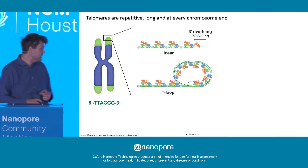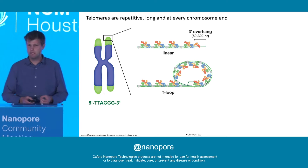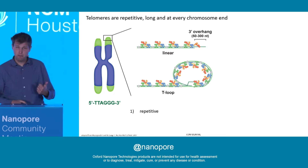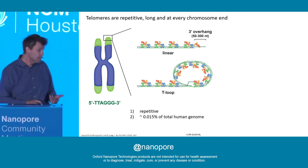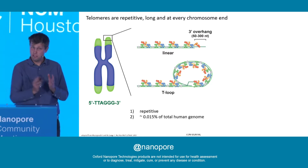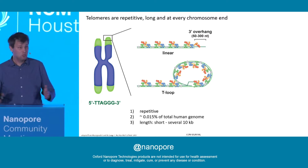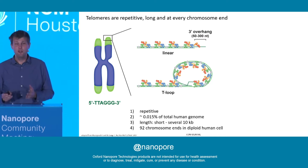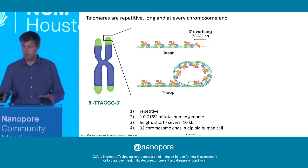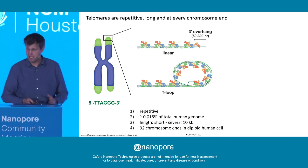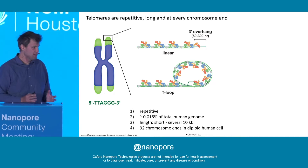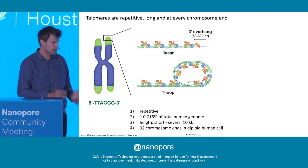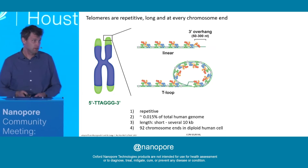Coming back to why it is so challenging to sequence entire human telomeres — there are four reasons. First, they are repetitive TTAGGG repeats. Second, telomeres only contribute to a very small fraction of the human genome. Third, they can be quite long, up to several tens of kilobases. And finally, every chromosome end should have a telomere. These factors make it extremely challenging to sequence, map, and assemble entire human telomeres by classical Sanger or next-generation sequencing.